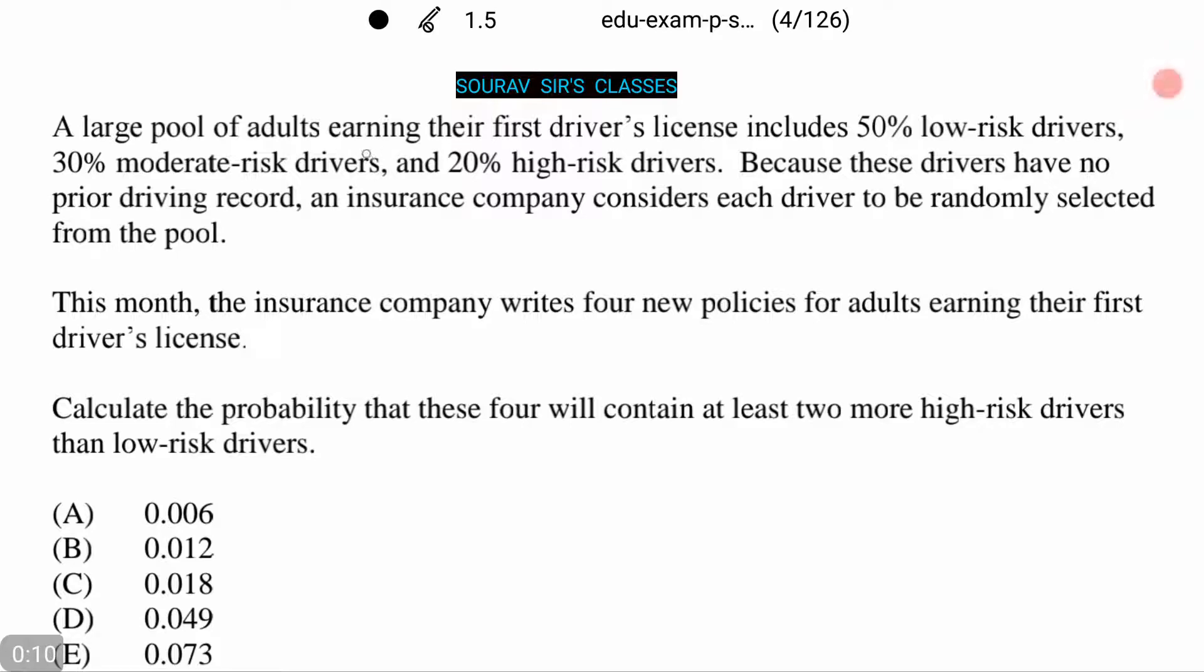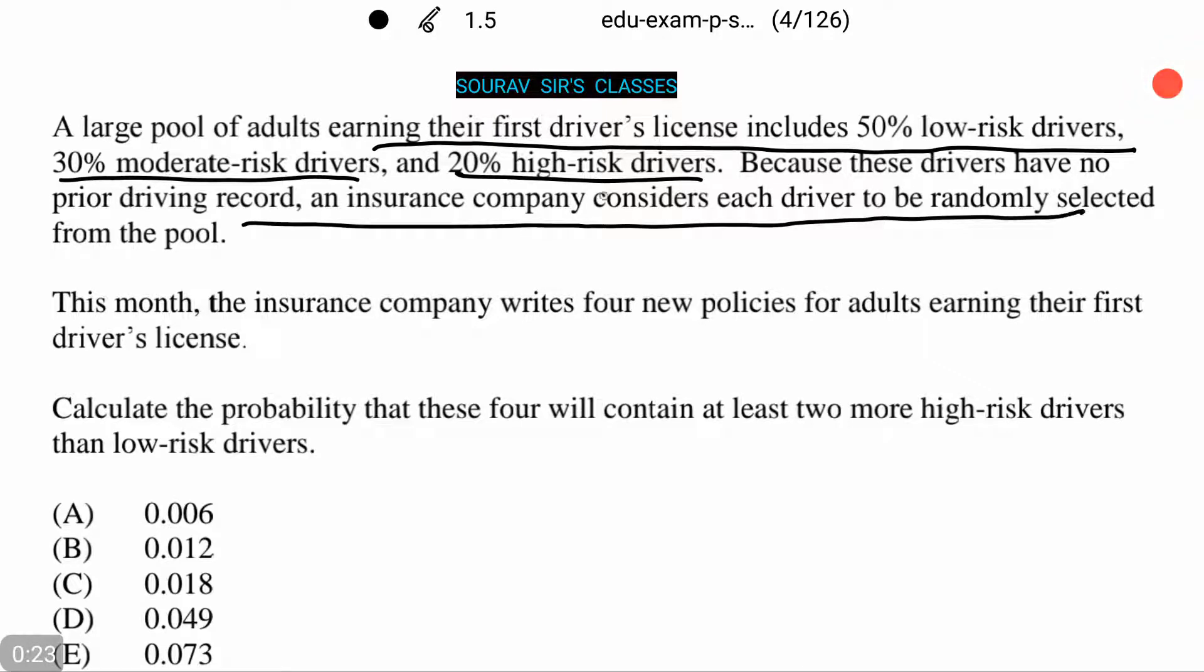A large pool of adults earning their first driver's license includes 50% low-risk drivers, 30% moderate-risk drivers, and 20% high-risk drivers. Because these drivers have no prior driving record, an insurance company considers each driver to be randomly selected from the pool. This month, the insurance company writes four new policies for adults earning their first driver's license.